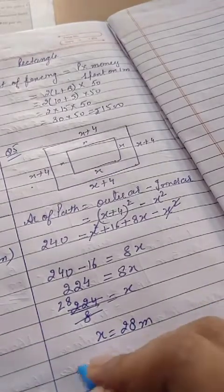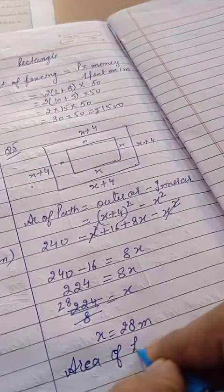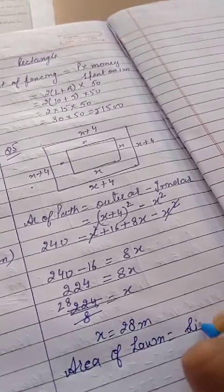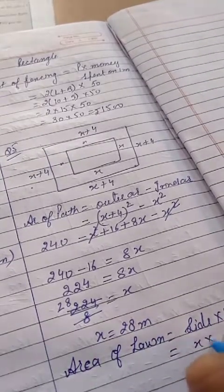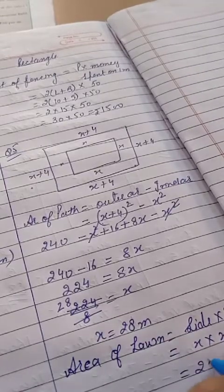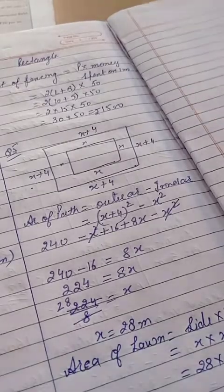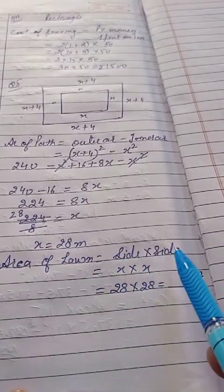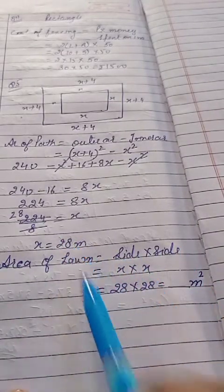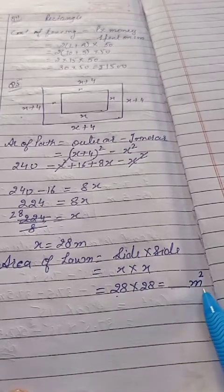What are we asked to find? Area of the lawn. Area of the lawn equals side × side — since it's a square, that's X × X. The value of X is 28, so area equals 28 × 28. Write the answer in meter square.